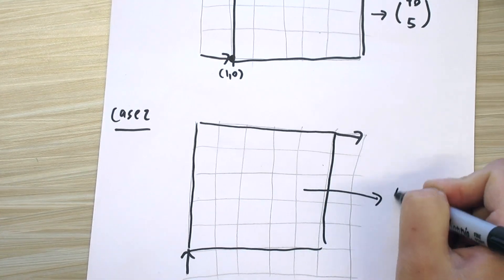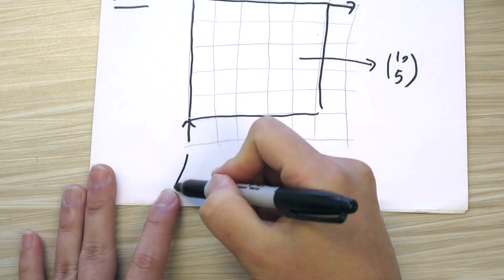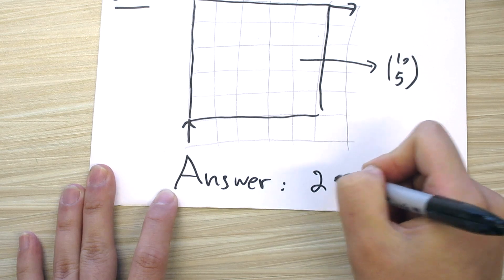So there are 10 choose 5 here to travel from here to here. And likewise, this one also gives you 10 choose 5. So what's the answer? It's twice of 10 choose 5.